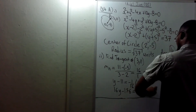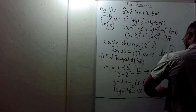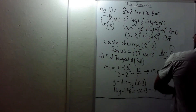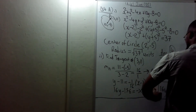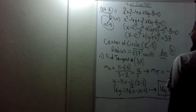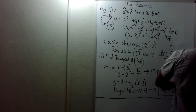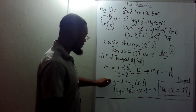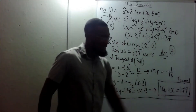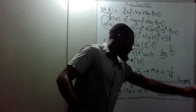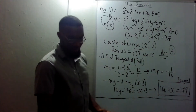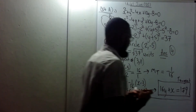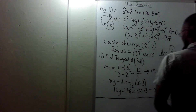Bringing the x over, the tangent equation becomes 16y plus x equals 179. You could leave your answer at the earlier step, but I like to write it in the form of a line: x plus 16y equals 179. That part is worth four marks.